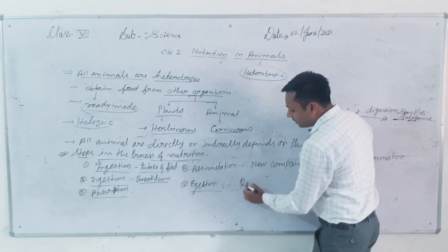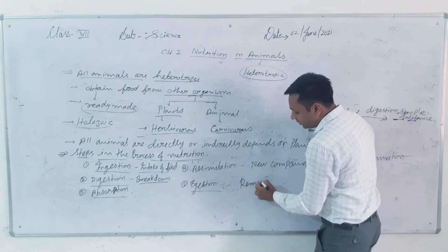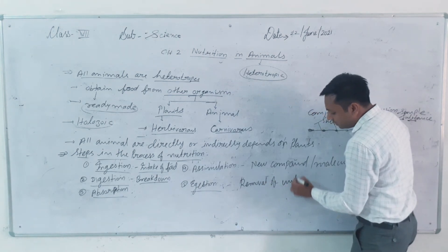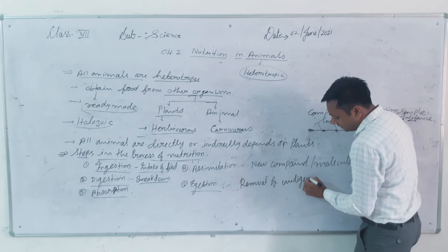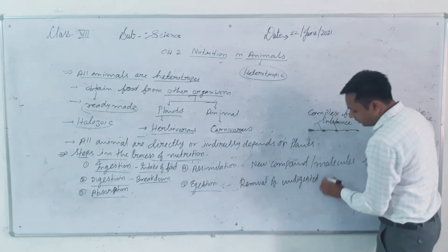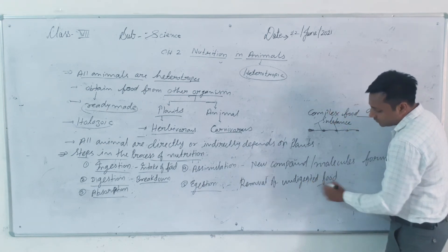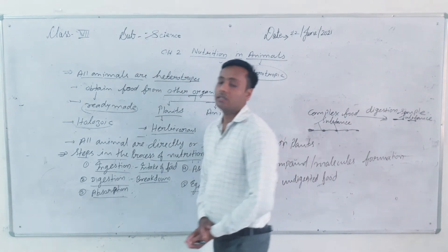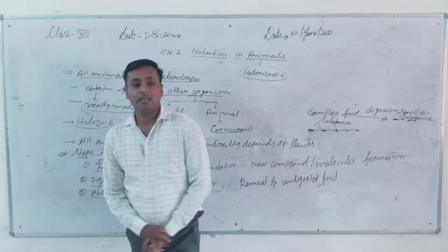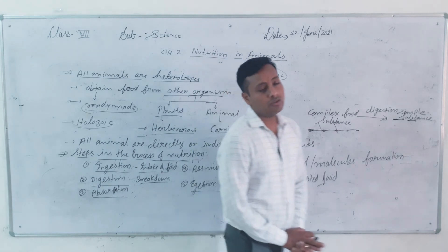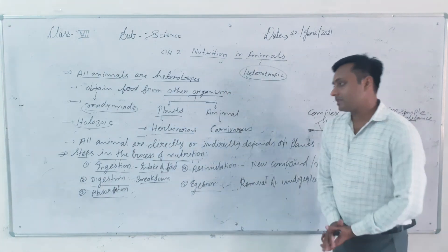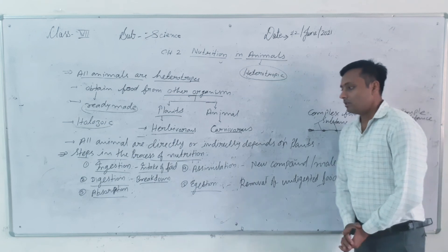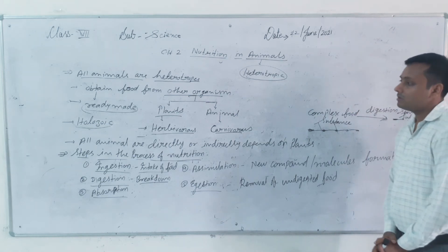The fifth step is egestion. Egestion means the removal of undigested food. If the food is not digested or not useful, the body removes it. So we have five steps in nutrition: ingestion, digestion, absorption, assimilation, and egestion.